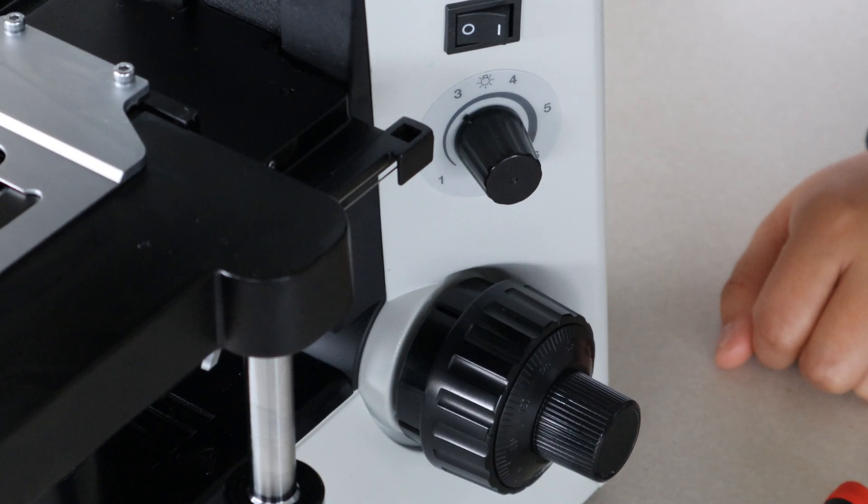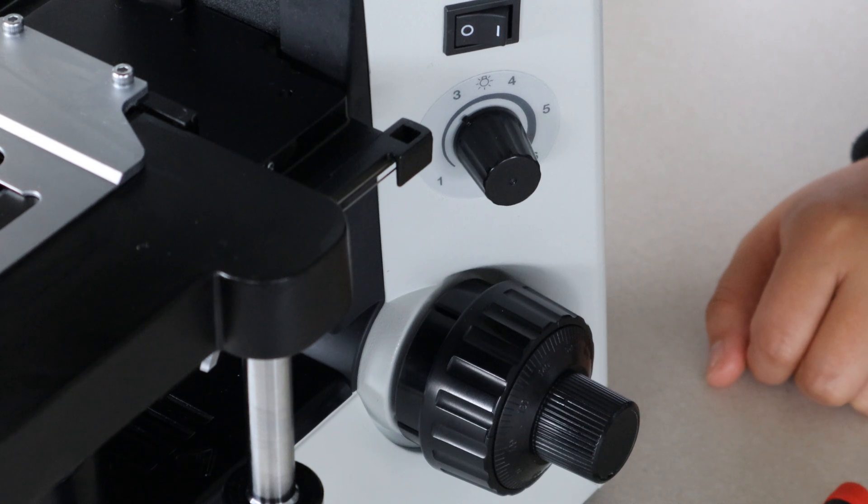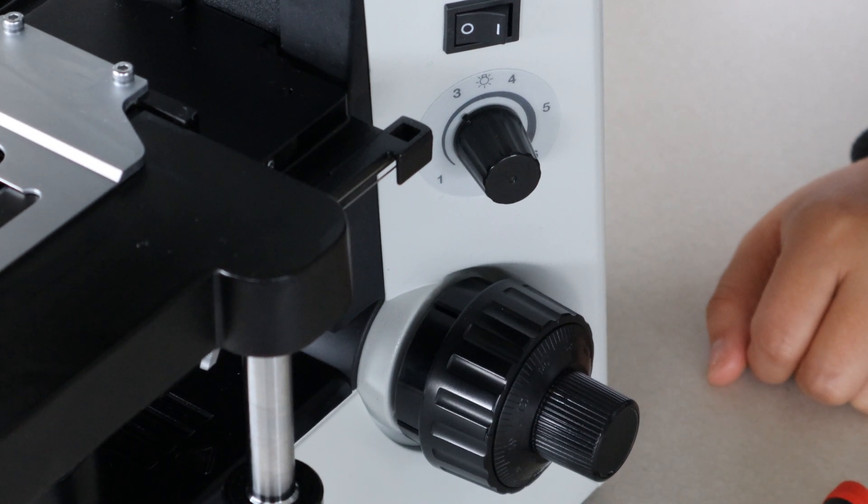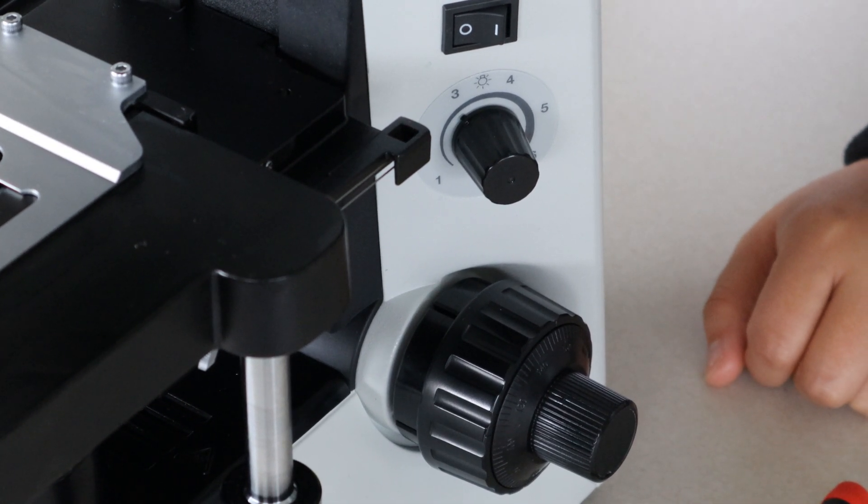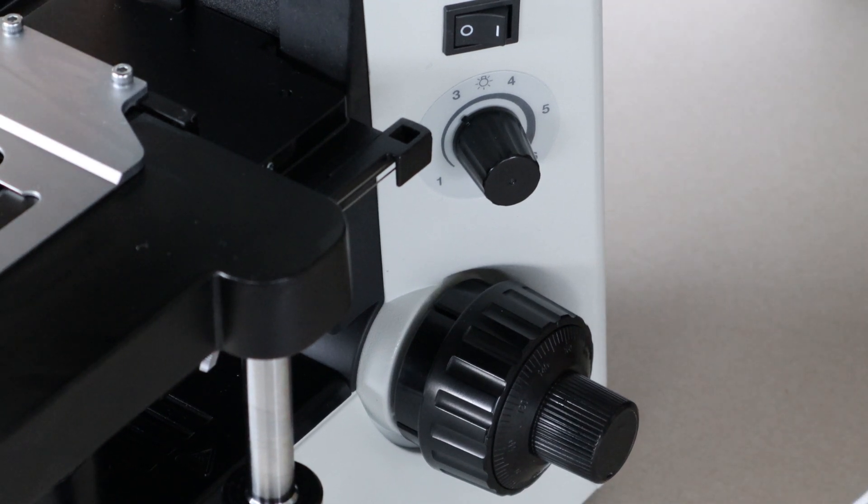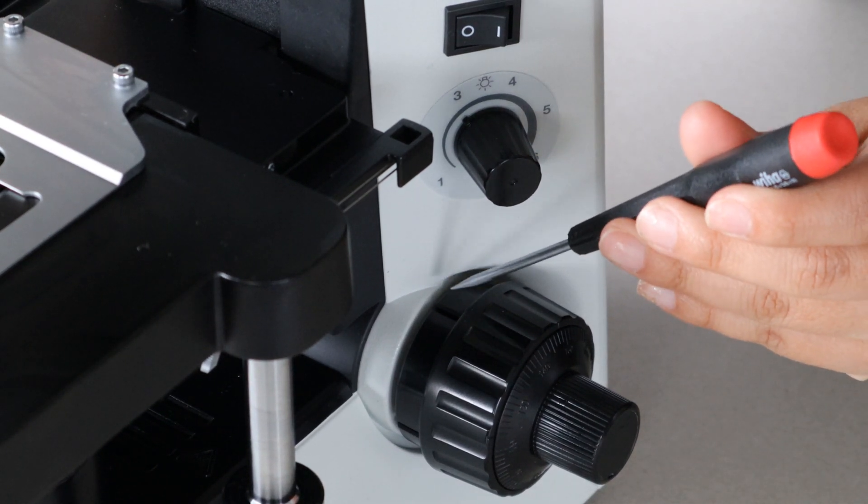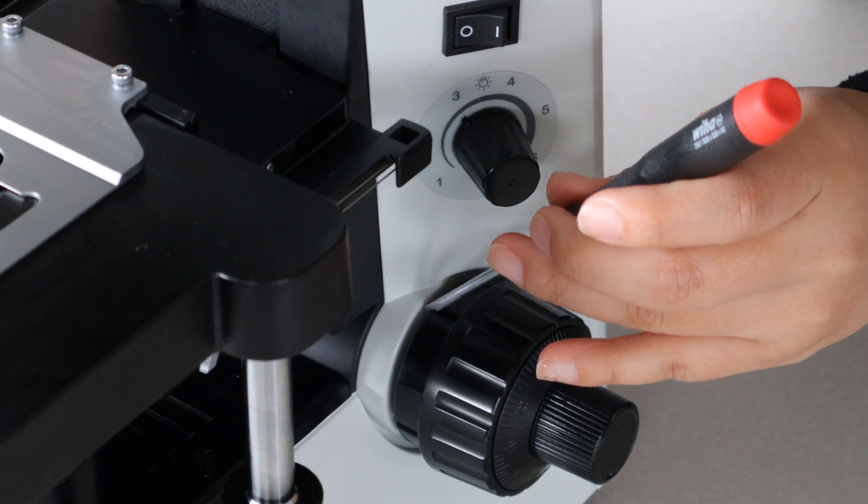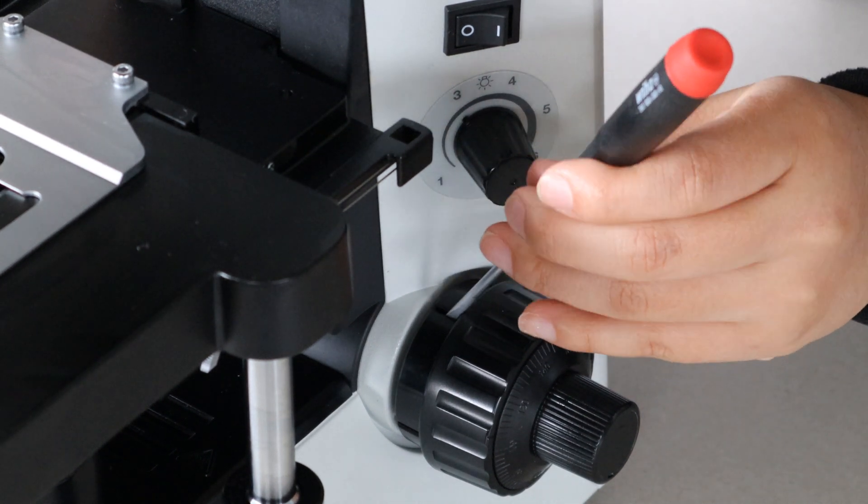So turning the tension adjustment clockwise will increase the tension, and turning it counterclockwise will decrease the tension. And like you saw, just about an eighth to a quarter turn should be enough to get it adjusted down. You'd want to do this if you felt your tension was too stiff on your microscope.